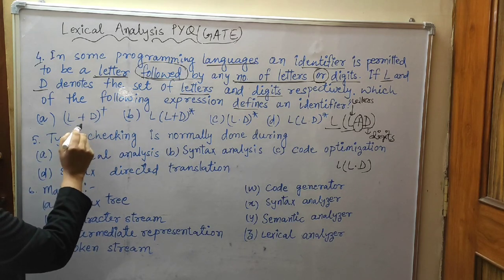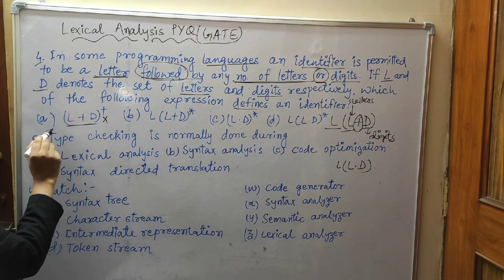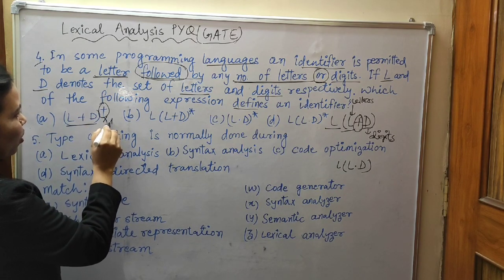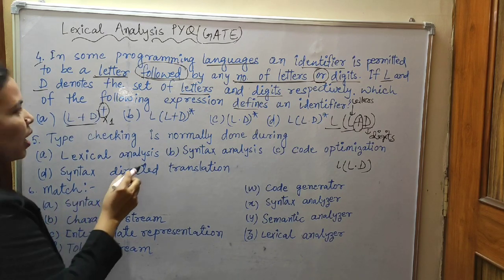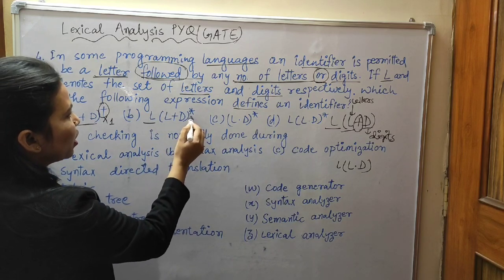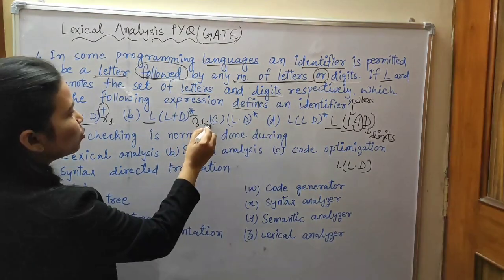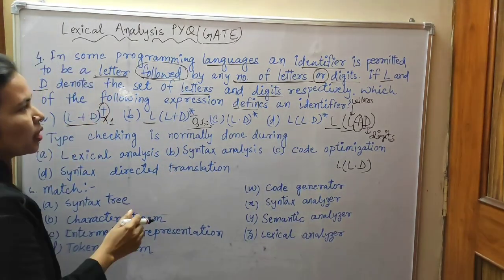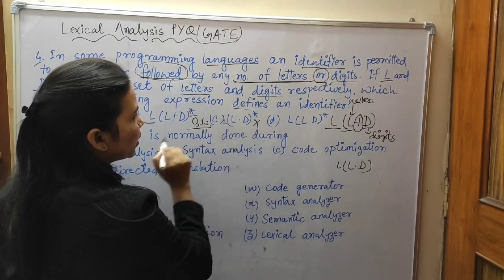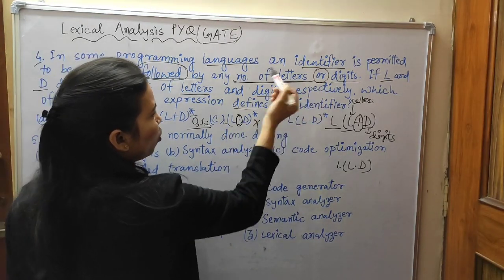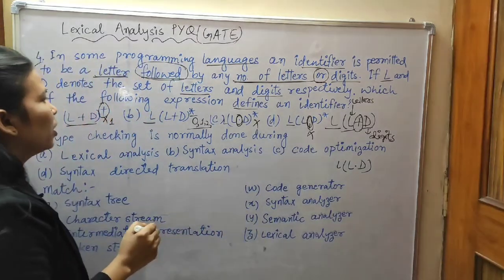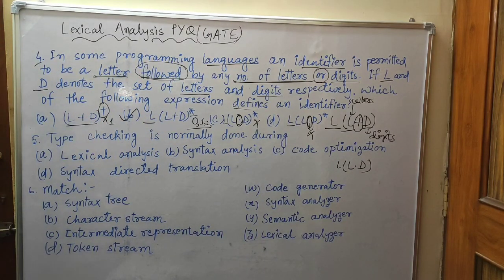Analyzing the options: L(L+D)* with Kleene closure — the plus means starting from 1, and Kleene closure starts from 0. Option B, L(L|D)* — letter followed by letter or digit with Kleene closure — is correct. Using AND operator instead of OR is wrong. The correct answer is option B: letter followed by (letter or digit) Kleene closure.